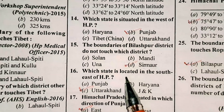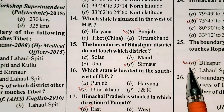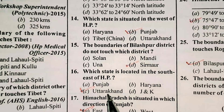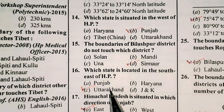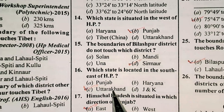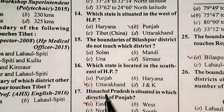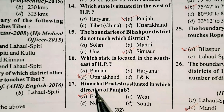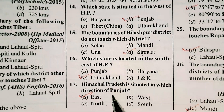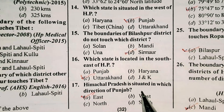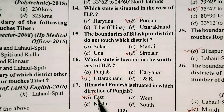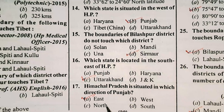Which state is located in the south east of Himachal Pradesh? Option C is correct — Uttarakhand. Himachal Pradesh is situated in which direction of Punjab? Option A is correct — East.